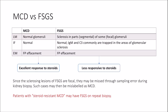One caveat to keep in mind is the differentiation between minimal change disease and focal segmental glomerulosclerosis on renal biopsy. In both conditions, immunofluorescence is normal and electron microscopy reveals podocyte foot process effacement. The difference is on light microscopy, which reveals normal glomeruli in the case of minimal change disease, and sclerosis that is both segmental and focal in the case of focal segmental glomerulosclerosis.